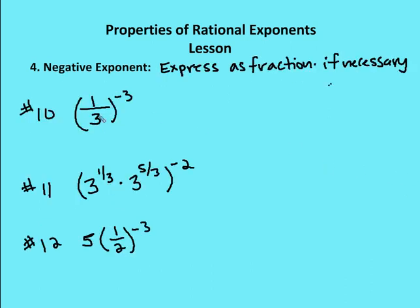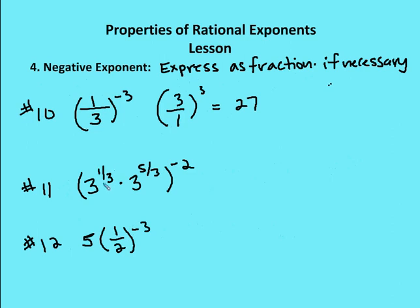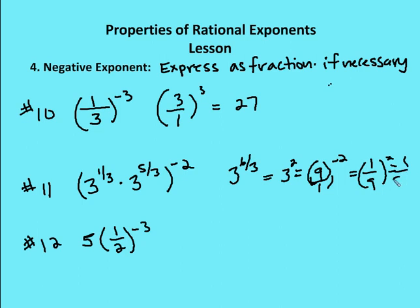Let's look at some problems. Problem 10: 1 over 3 to the negative 3 gives me 3 over 1 to the third, which is 27 over 1, or 27. Next: 3 to the 1 third times 3 to the 5 thirds. Using product of powers, I add the exponents: 3 to the 1 third plus 5 thirds gives me 3 to the 6 thirds, which is the same as 3 squared, or 9. Taking that all to the negative 2: 9 is 9 over 1, so the reciprocal is 1 over 9, and squaring gives 1 over 9 squared, which equals 1 over 81.